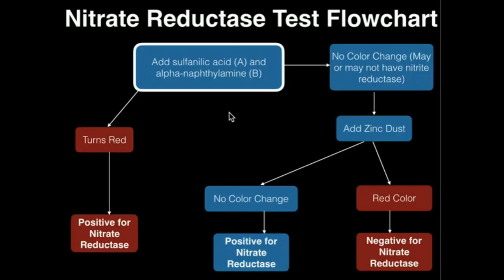Let's go to a flowchart. We're going to assume we have the nitrate broth incubated with the bacteria. When we add sulfanilic acid and alpha-naphthylamine, if we immediately get a red color change, then those bacteria are positive for nitrate reductase.